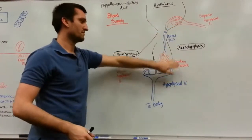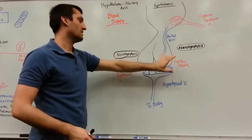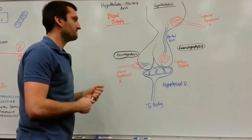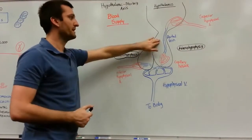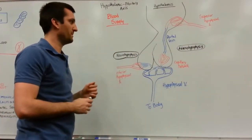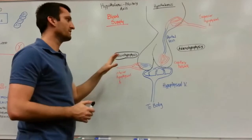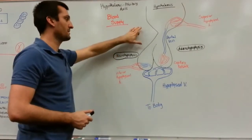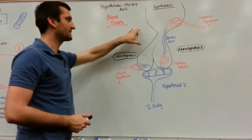The portal vein is between two arteries or a capillary network. It is one of two main portal systems in the body — one in the liver and then one in the hypothalamic-pituitary axis.